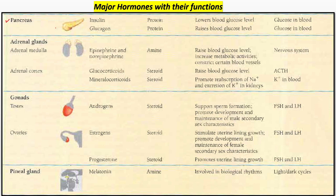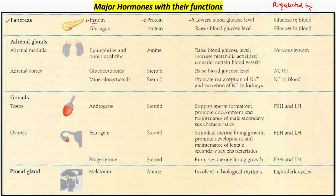Pancreas se hum majorly dekhte hain, doh hormones release hote hain from pancreatic alpha cells and beta cells. Insulin, one of the major hormones jo ki glucose level ke homeostasis ko body mein banata hai. Insulin ka agar hum chemical structure dekhen, toh yeh ek protein hai. Agar blood mein extra glucose hai, toh us glucose ko fix karayega — and this is regulated by glucose in blood.